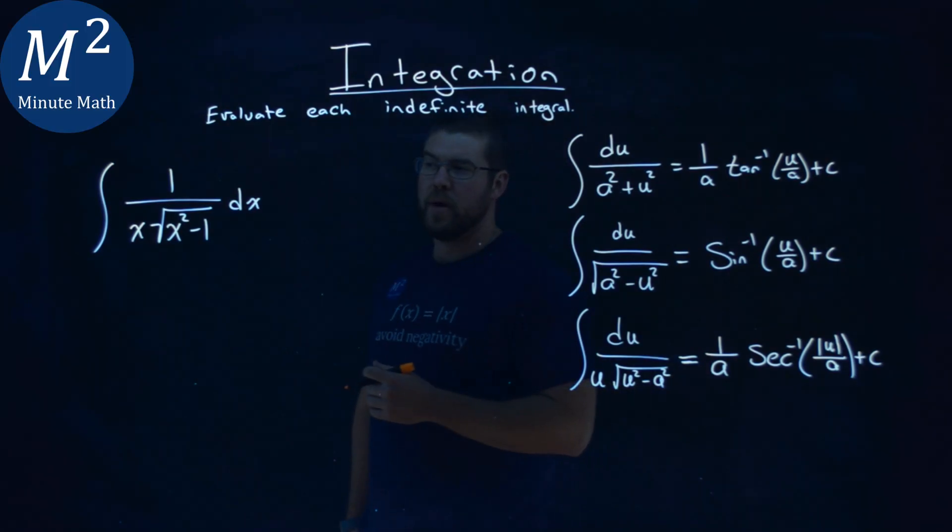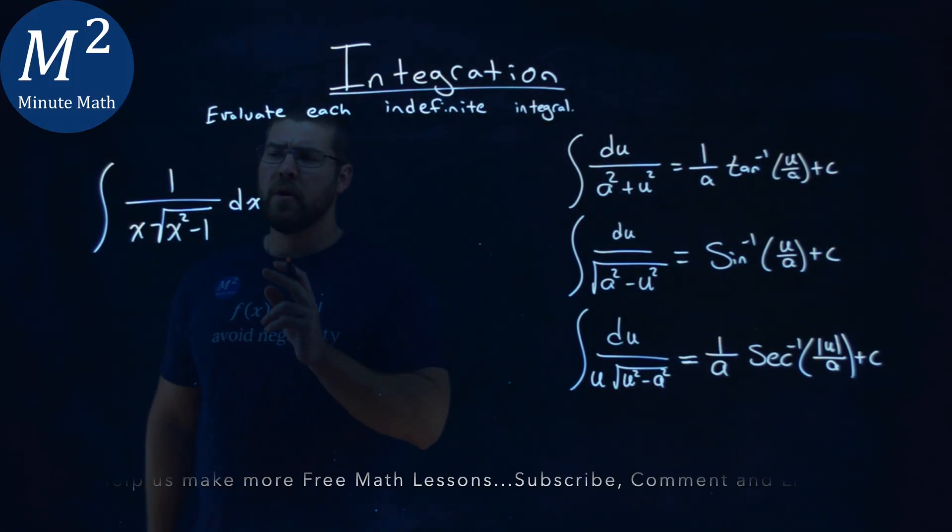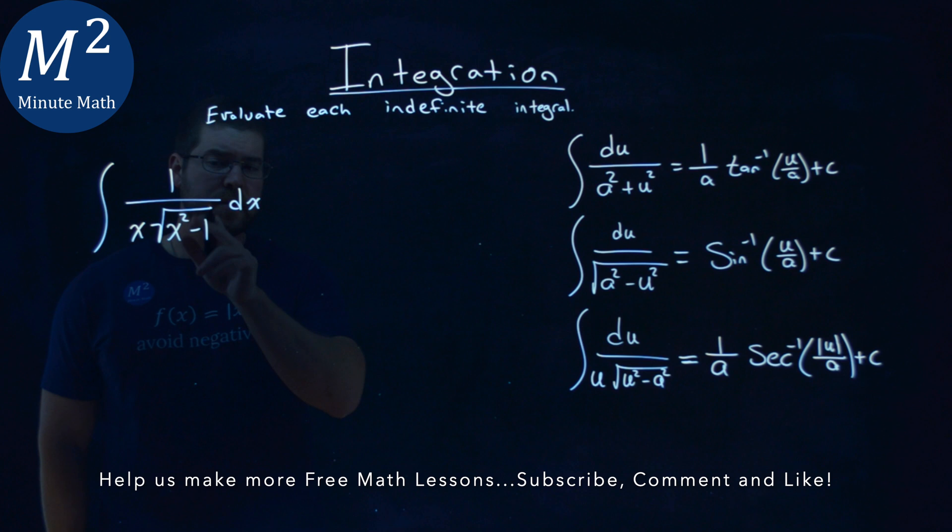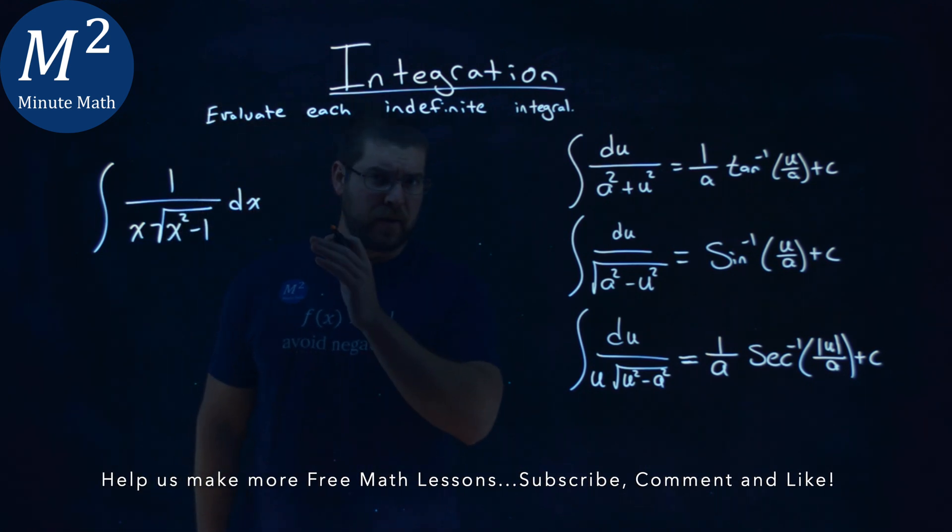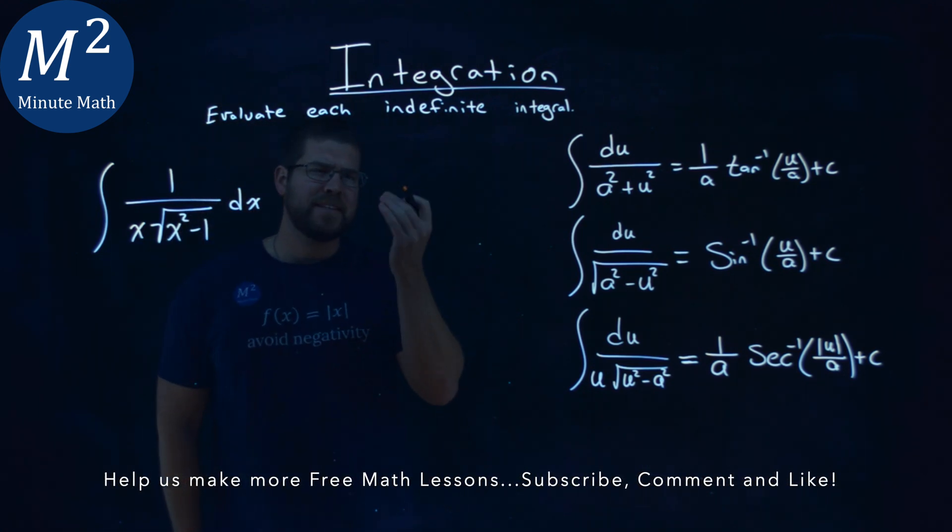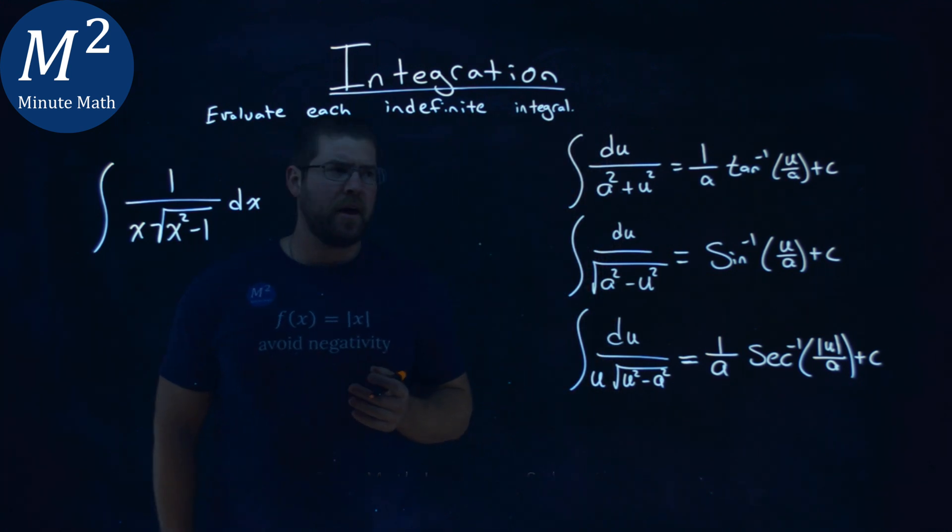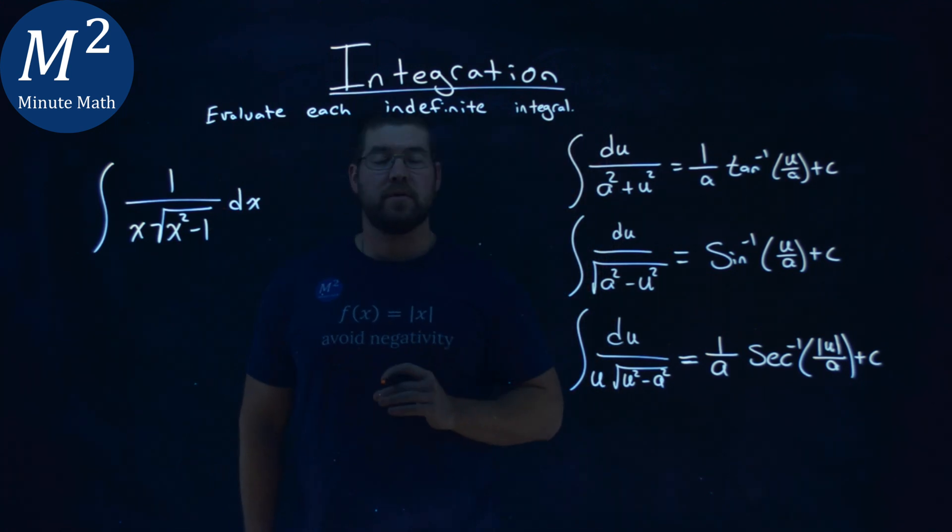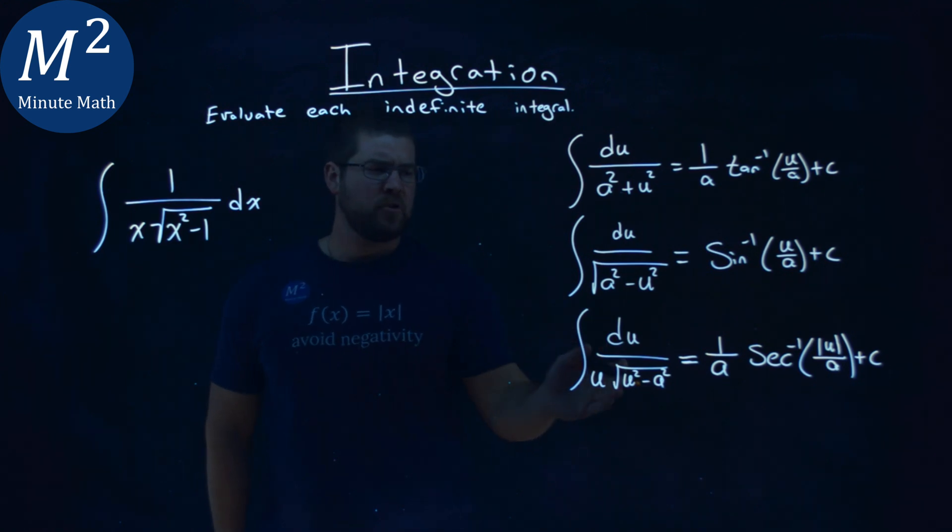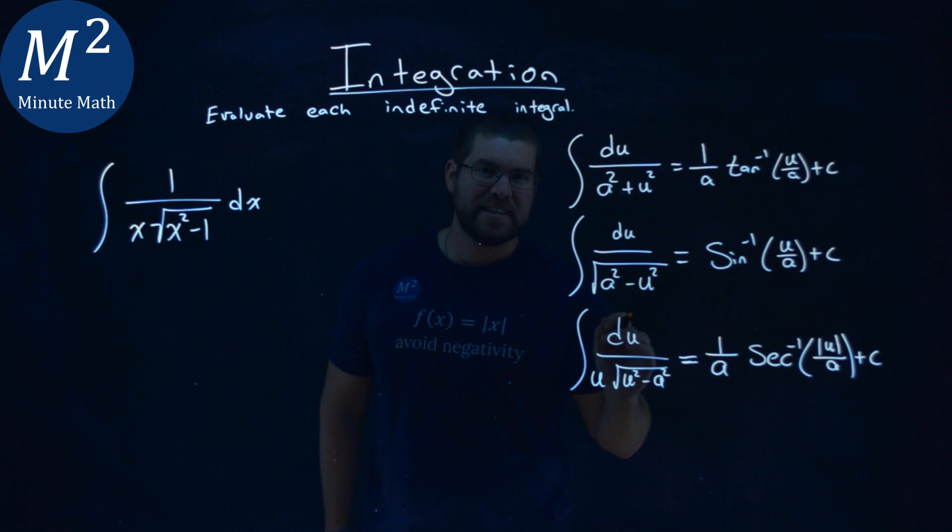We're given this problem right here. The integral of 1 over x times the square root of x squared minus 1 dx, and we have to find this indefinite integral. Now I have my definitions here, and I want to see which one it looks closest like. And that comes down to be the third one here. It kind of looks similar to the arc secant definition here.